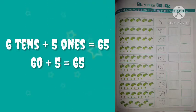Now, see here — 6 tens and 5 ones. 6 tens and 5 ones means 60 plus 5. 60 plus 5 is equal to 65. Ones go in the ones place and tens go in the tens place.